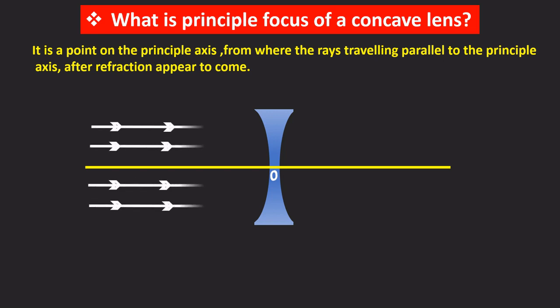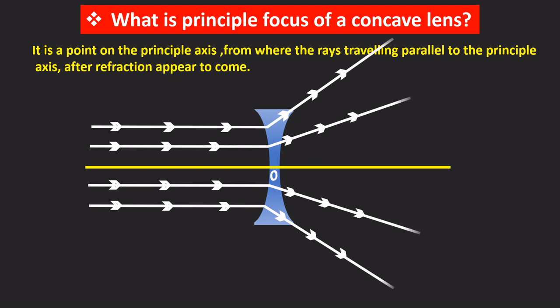The light rays traveling parallel to the principal axis after refraction they diverge because it is a diverging lens. But these rays they appear to come from one point and that point is called F. So that F is the principal focus of concave lens.